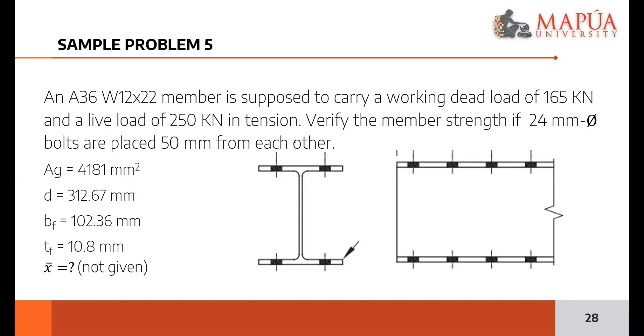We're asked to verify for the member strength if 24mm diameter bolts are placed 50mm from each other. This means 50mm spacing between each bolt. So all of them are spaced 50mm apart. If you draw it, this is the I-section. This is the upper flange, and this is the lower flange.